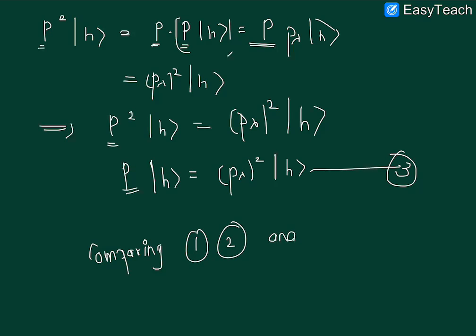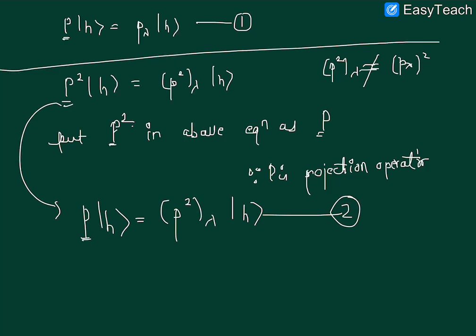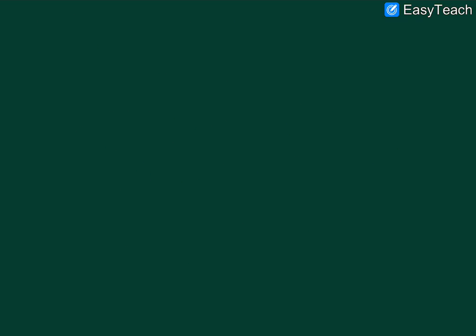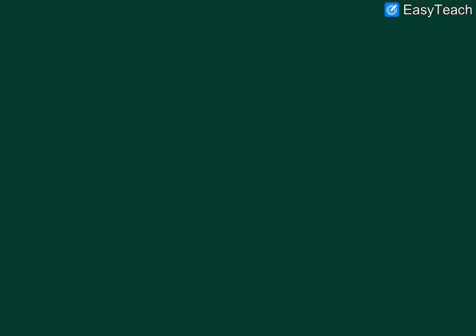Now comparing one, two, and three, you can see that the left-hand side on all three of them is same. So the eigenvalues on the right-hand side must be equal for vector |h⟩. So (P_λ)^2 equals to P^2_λ equals to P_λ. This is the required relation that we need.